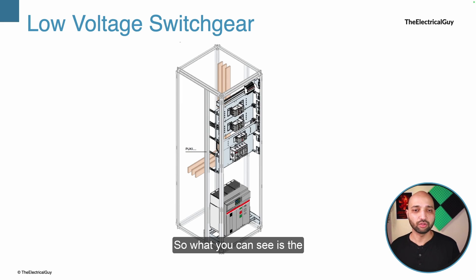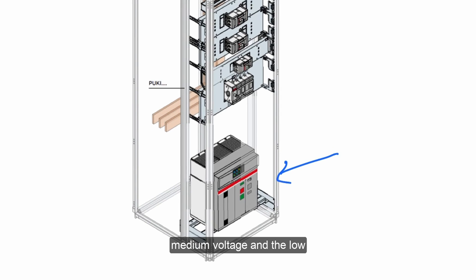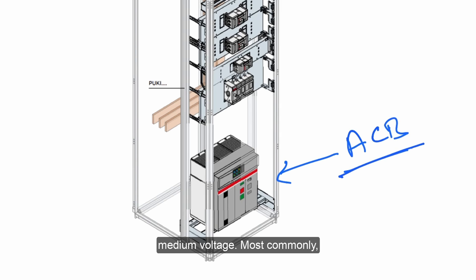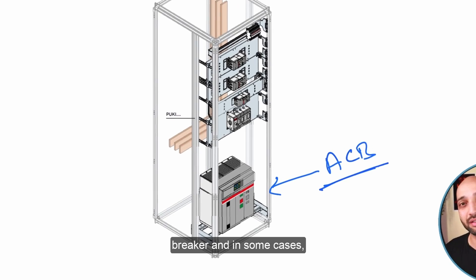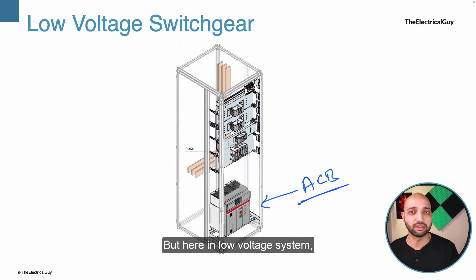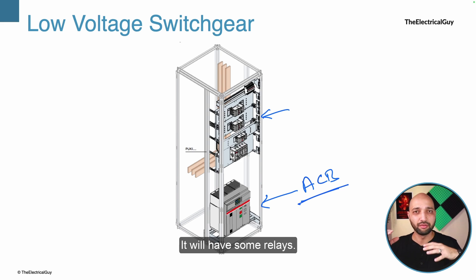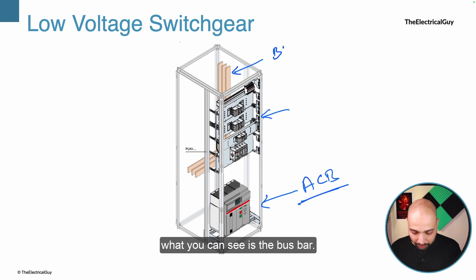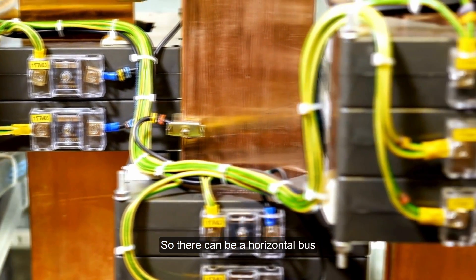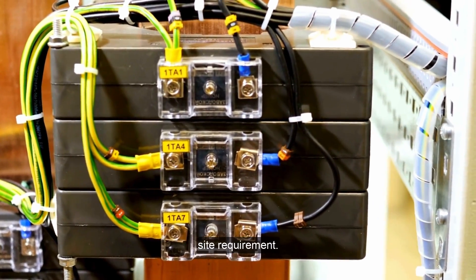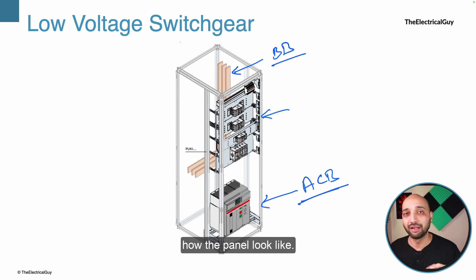Here is an example of a low voltage switchgear panel. At the bottom you can see a circuit breaker. The key difference from medium voltage switchgear is that the circuit breaker used here is an air circuit breaker (ACB). Medium voltage most commonly uses a vacuum circuit breaker, and in some cases an SF6 circuit breaker. But in low voltage systems, the majority of breakers are air circuit breakers. You can also see control circuitry with relays, meters, and MCBs, and at the back in brown you can see the bus bar. Bus bars are really important; there can be horizontal or vertical bus bars depending on site requirements.